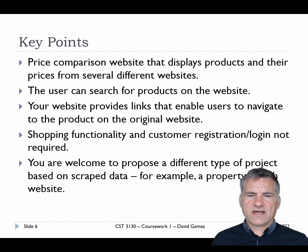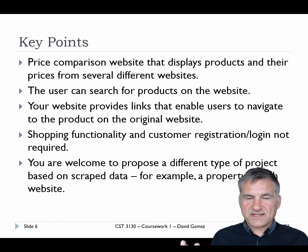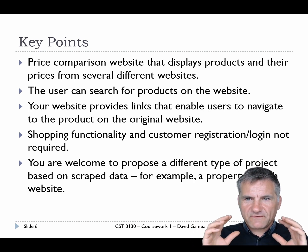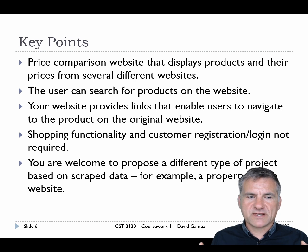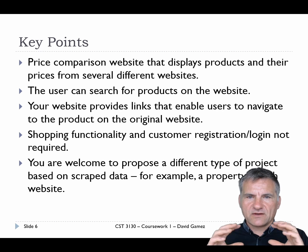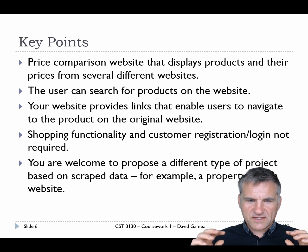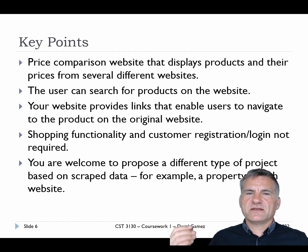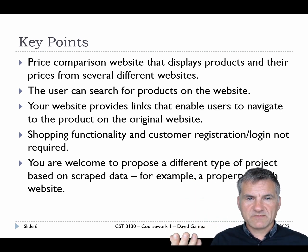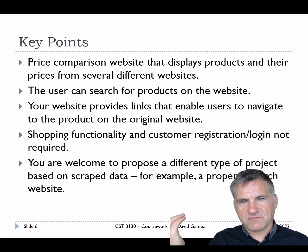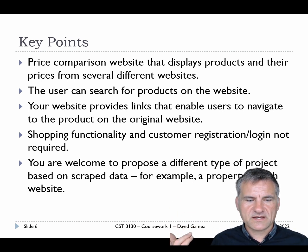So it's a price comparison website. The idea is it allows you to figure out where's the cheapest place to buy something. It hoovers up a load of data from other websites, and then on the front end of your website you'll be able to search for a particular product and list all the products that match. You select the product you want to do the price comparison on, and then you can click on a link that'll take you to the original website where you could, in theory, buy the product.